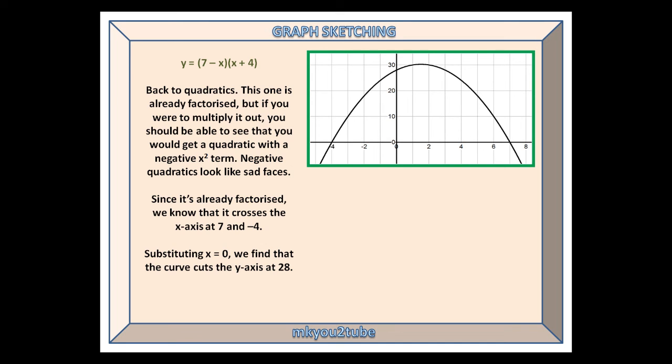Since it is already factorised, we know that it crosses the x-axis at 7 and minus 4, and substituting x equals 0, we find that the curve cuts the y-axis at 28.